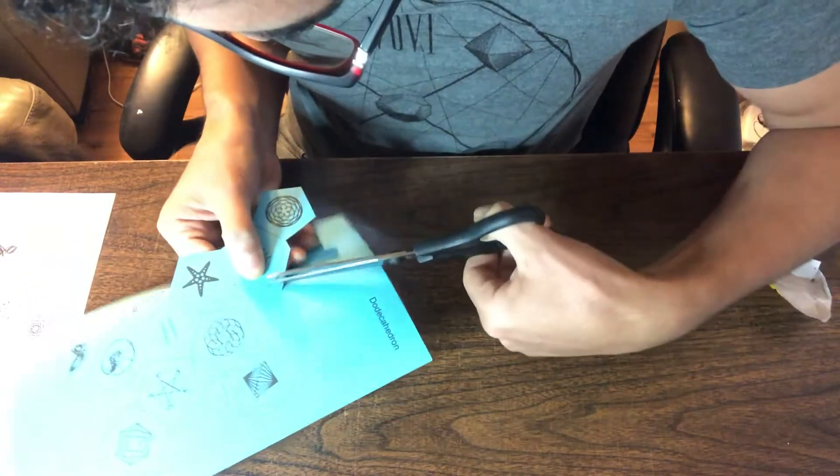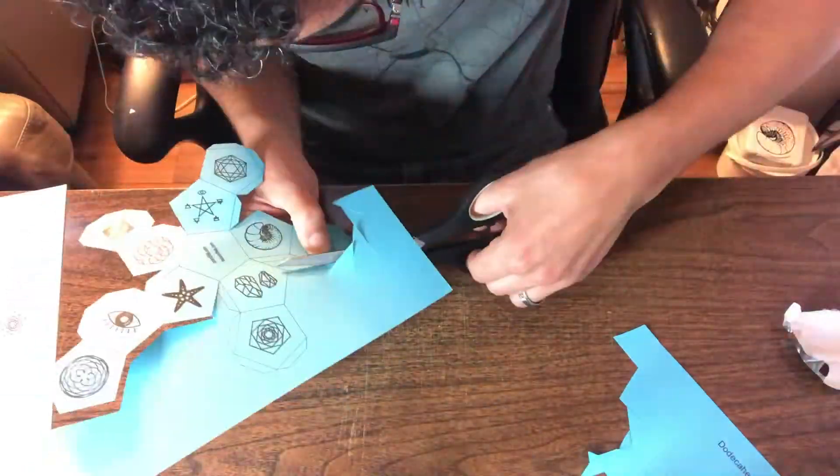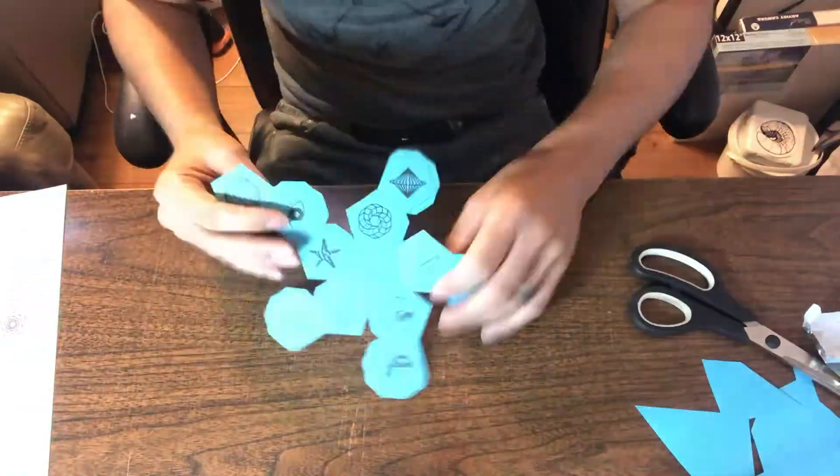And then once you do that, cut it with some scissors. An exacto knife would be more exact. The scissors are a little more rough, but quicker.